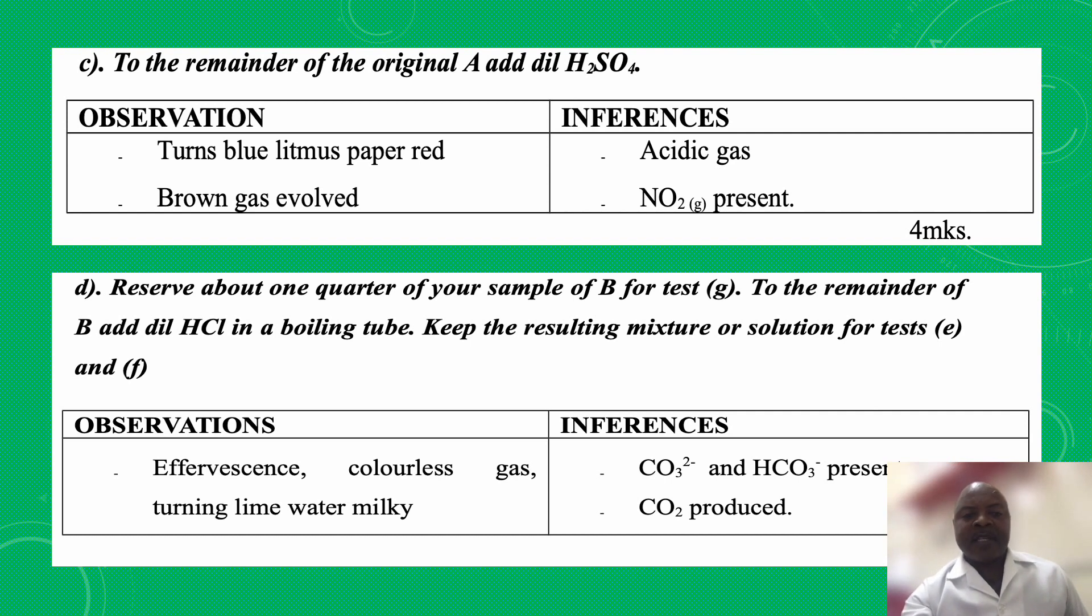Part D: Reserve about one quarter of your sample of B for test G. To the remainder of B, add dilute hydrochloric acid in a boiling tube. Keep the resulting mixture or solution for test E and F. So on doing that, my observation was effervescence, a colorless gas, and the gas turned lime water murky. You could also mention that there was a cloudy solution. Any cloudy solution is an indication of a white precipitate.